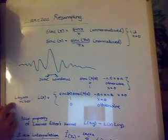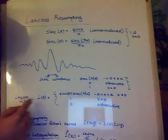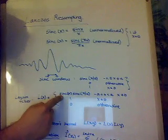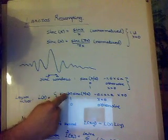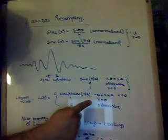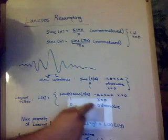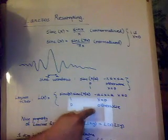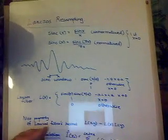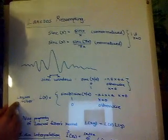And what the Lanczos filter then is, is applying the sinc window to the sinc function. So you get sinc of x, sinc of x over a, when x is between negative a and a, and not 0, 1 if x is 0, and 0 otherwise. So this is called the Lanczos filter.